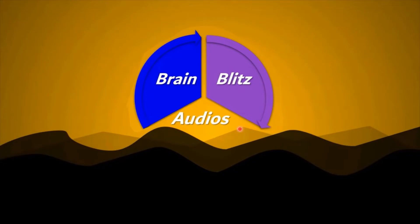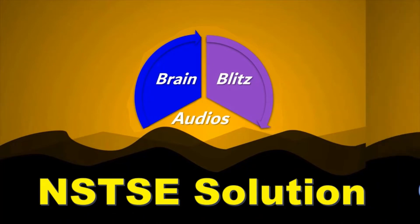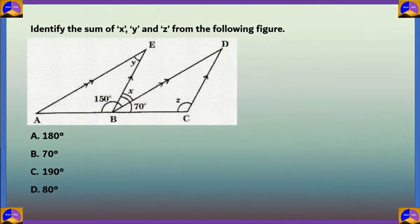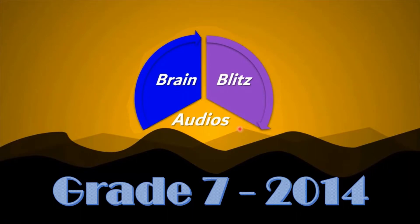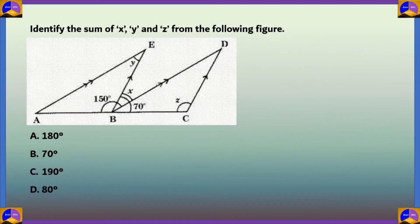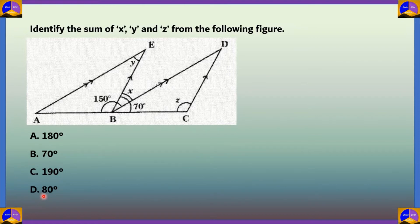Hello everyone, welcome to Brain Blitz Audios. Today let's tackle some of the questions asked in NSDSE. We'll focus on questions asked in NSDSE 2014 for Grade 7. This is the first question: identify the sum of X, Y, and Z from the following figure. Option A: 180°, Option B: 70°, Option C: 190°, Option D: 80°.